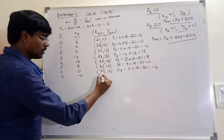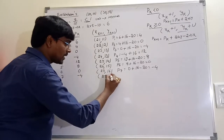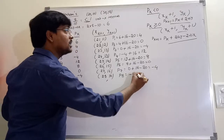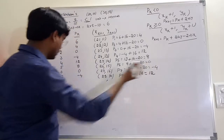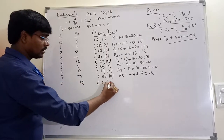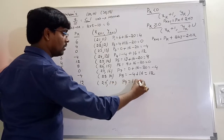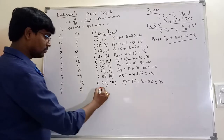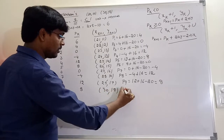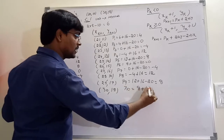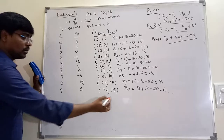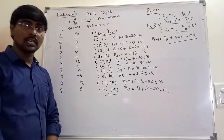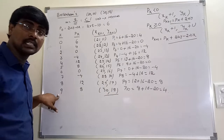P7 equals 0 plus 16 minus 20, that is minus 4. At k=7, p7 is less than 0 so the coordinate is (28, 16) with the same y value. P8 equals minus 4 plus 2 delta y, that is 16, giving value 12. Next coordinate is (29, 17). P9 equals 12 plus 16 minus 20, giving coordinate (30, 18). We are reaching the last point. The procedure repeats delta x number of times, and delta x is 10, so we iterate 10 times from 0 to reach the endpoint.